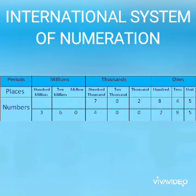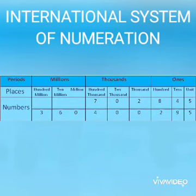In the thousands period, we have the thousand, ten thousand, and hundred thousand places. And in the millions period, we have the million, ten million, and hundred million places. Up to the ten thousand place, both systems follow the same pattern.